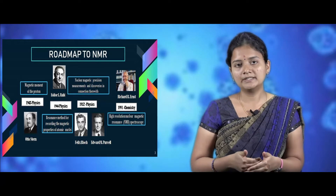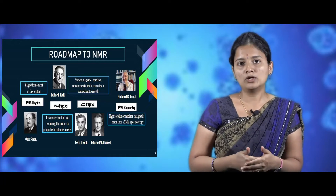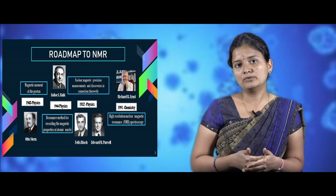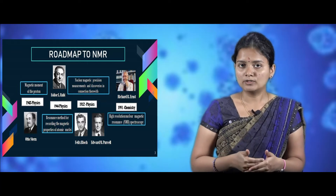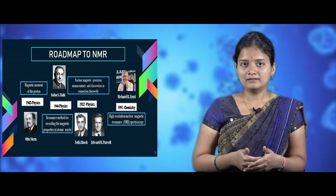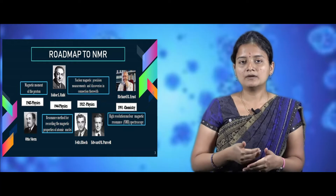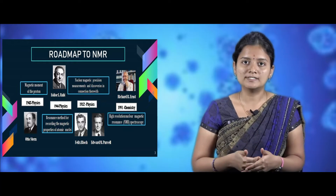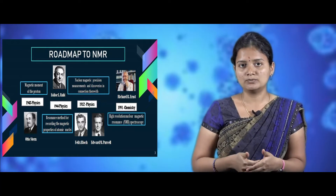Purcell and Bloch were the first persons to determine the NMR studies and did major work related to NMR, both being awarded the Nobel Prize in 1952. The scientist Richard was another person who discovered high-resolution NMR properties and concepts, and he was awarded the Nobel Prize in the year 1991 in the field of chemistry.